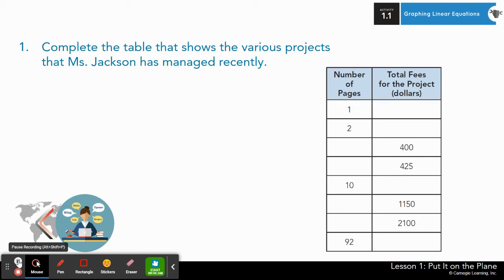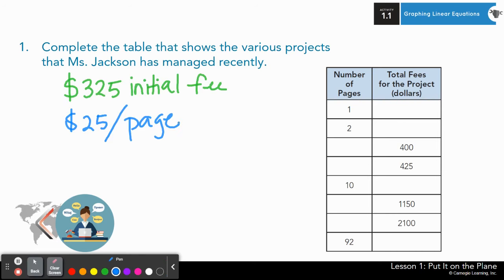So question one, it says, complete the table that shows the various projects that Ms. Jackson has managed recently. But first, let us remind ourselves of Ms. Jackson's fees. So remember, she charges $325 for her initial fee to get started and then $25 per page or for each page translated. And we got this information from the Getting Started activity we just completed.